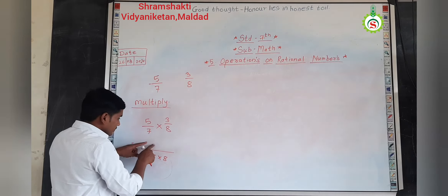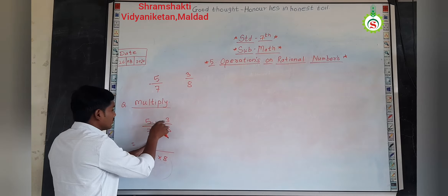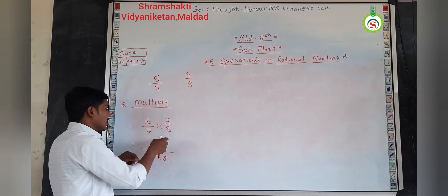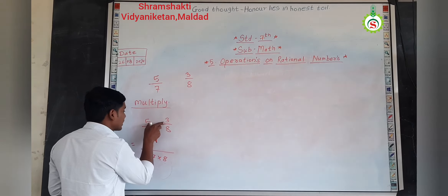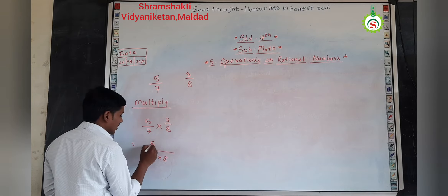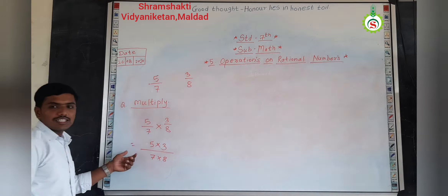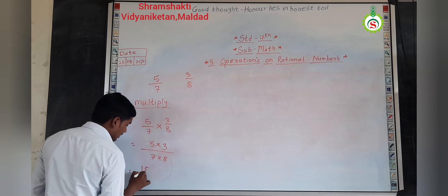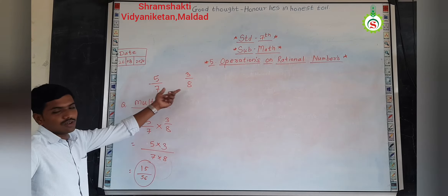So, for the numerator: at the addition, we have taken cross multiplication — addition of cross multiplication. For the subtraction, we have taken subtraction of cross multiplication. Now, for the multiplication, simply we will take the multiplication of the numerator. Which are the numerators? Five and three. So, simply, as the numerator, we will take the multiplication of the numerator. So, five threes are fifteen. And seven eights are fifty-six. So, fifteen by fifty-six is the answer of multiplication of the rational numbers.